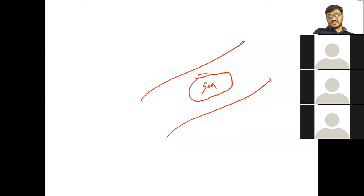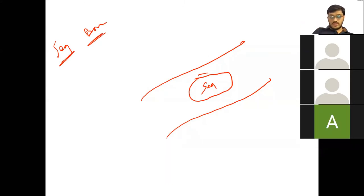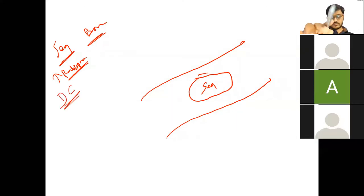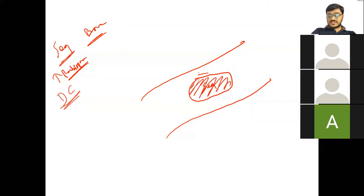Compared to the surrounding bone, the sequestrum is more radiopaque. The reason is dystrophic calcification — dead bone attracts more calcium, which is known as dystrophic calcification. Because of this, the sequestrum appears more radiopaque. Surrounding this sequestrum there is a radiolucent lining.